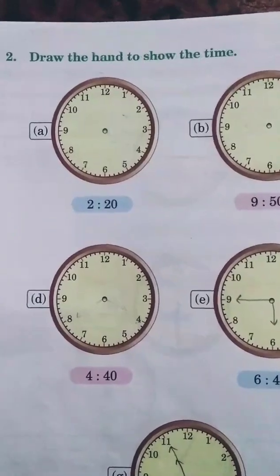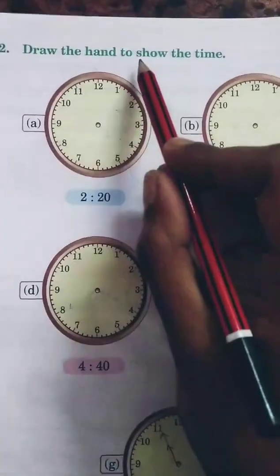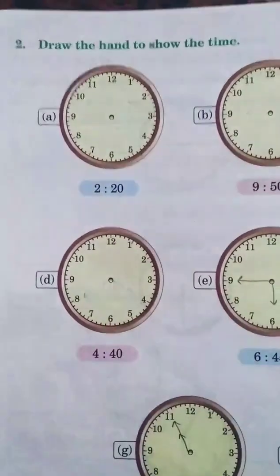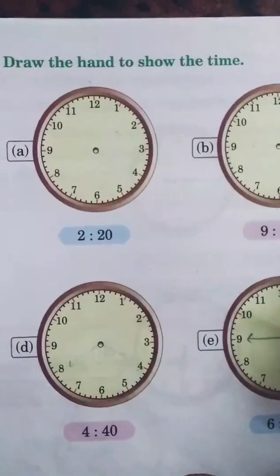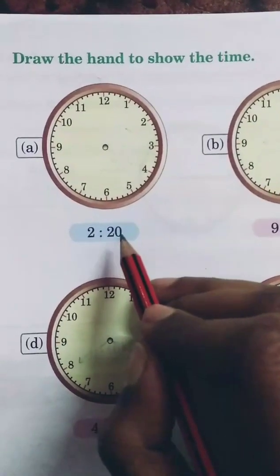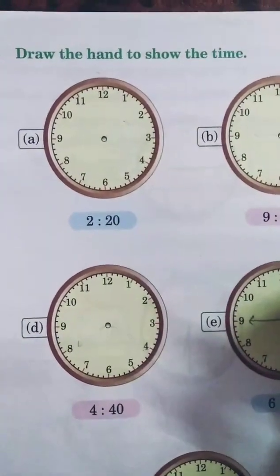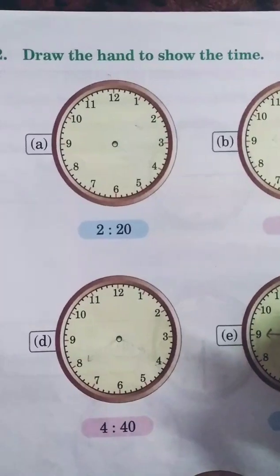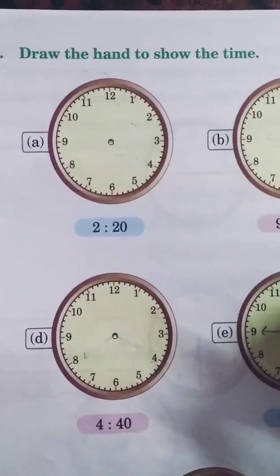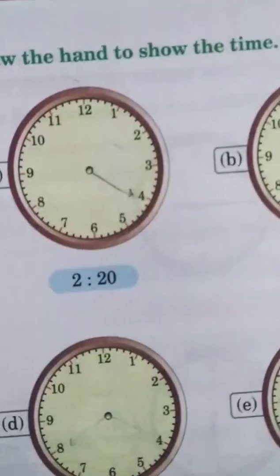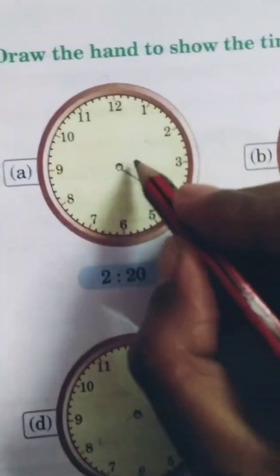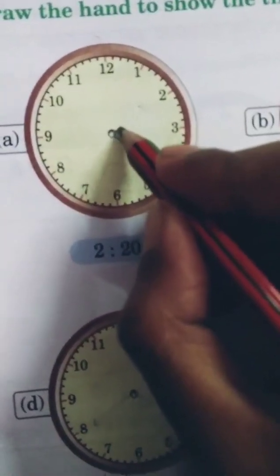Question 2: Draw the hands to show the time. For 2:20 — in the five-times table, 5 fours are 20 — so the minute hand is drawn at 4. The hour hand is drawn near 2, not exactly at 2.